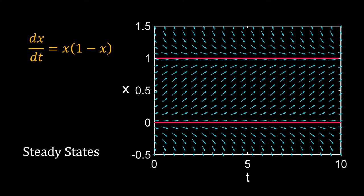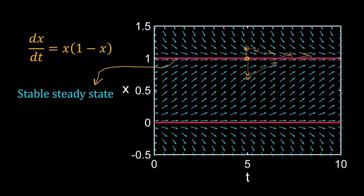Once the system is at a steady state it will not change with time. Suppose at t equal to 5, x is at 1, a steady state. Now we disturb it — suppose I forcefully pull it up and then allow the system to evolve with time. From the arrows on the direction field we know that after some time x will come back to x equal to 1. The same will happen if we reduce x from 1 to something lower. Therefore x equal to 1 is a stable steady state — if we perturb the system, with time it will return back to the same steady state.